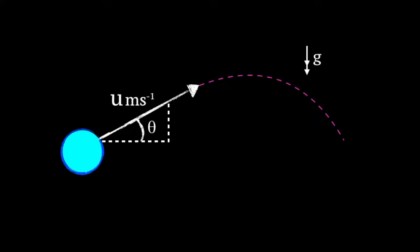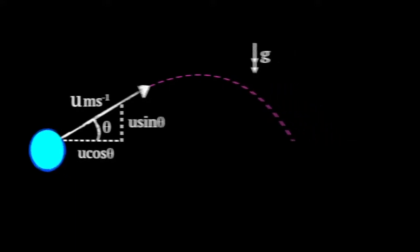That means we'll need to split the initial speed into its vertical and horizontal components. So using trig, the vertical component is opposite the angle, so that comes out as u sine theta, and the horizontal component of the speed is adjacent to the angle, so that comes out as u cos theta. So after that brief introduction, let's go through an example.